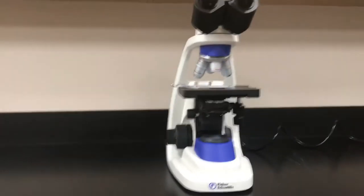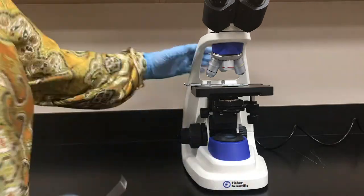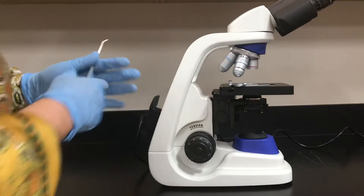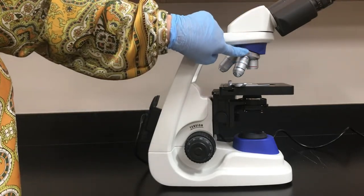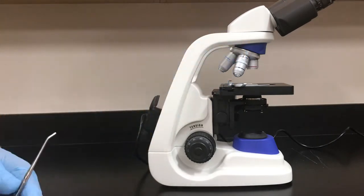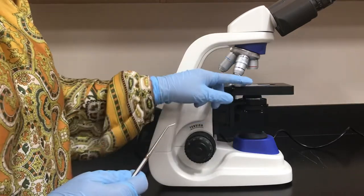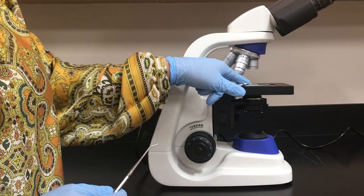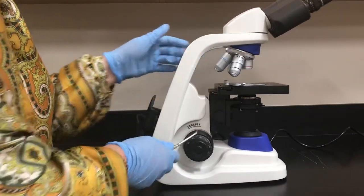For example, the part we call the base, the part we hold we call the arm, and this is the body. Here, all the objectives assemble on the nose piece or revolving piece. We have the stage, and we have stage clips. That's how we're able to put the slide in it.